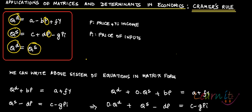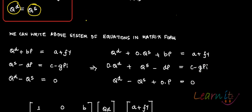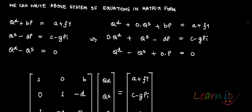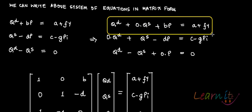A, B, C, D, F, G are constants — they are parameters. We take all endogenous variables to the left-hand side and all constants and exogenous variables to the right-hand side. So we get: QD plus 0·QS plus BP equals A plus FY, since there is no QS term in the first equation.